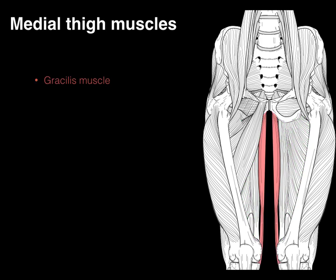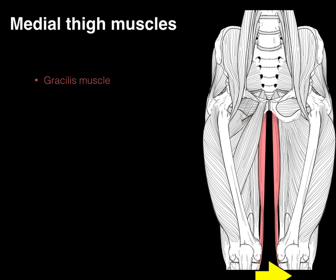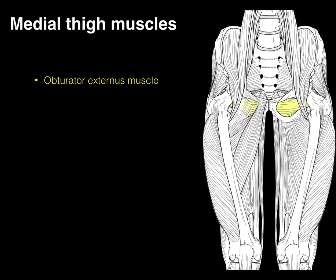Our gracilis muscle — gracile, which means slender — is this very thin, slender muscle that arises from the pubis and courses all the way down. It goes medial to the tibial tuberosity and is part of the pes anserinus.